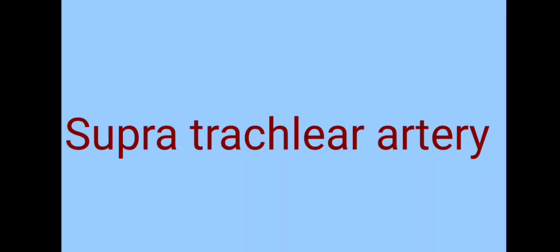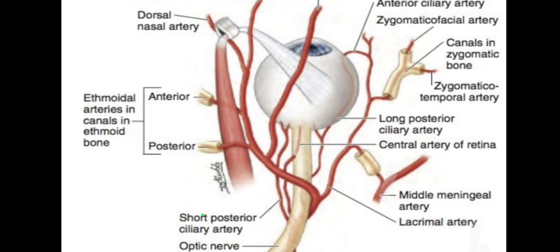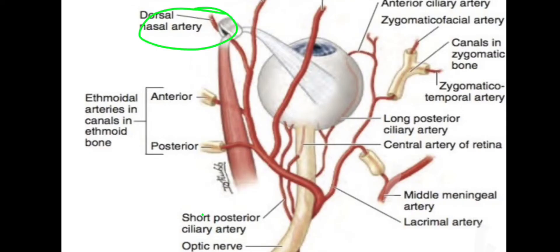The supratrochlear artery is a terminal branch of the ophthalmic artery; it pierces the orbital septum above the pulley for the superior oblique muscle. The dorsal nasal artery is also a terminal branch of the ophthalmic artery; it pierces the orbital septum, passes between the medial palpebral ligament, descends to the nose, gives branches to the lacrimal sac, and anastomoses with the facial artery.